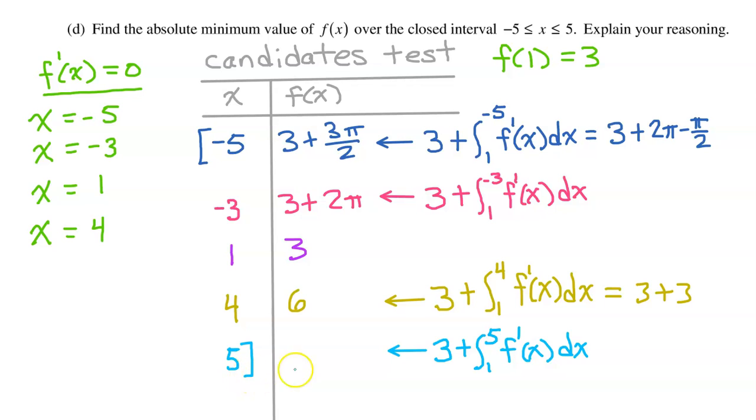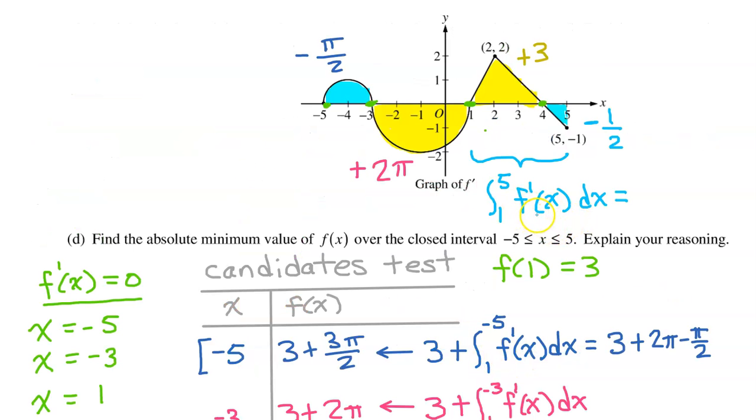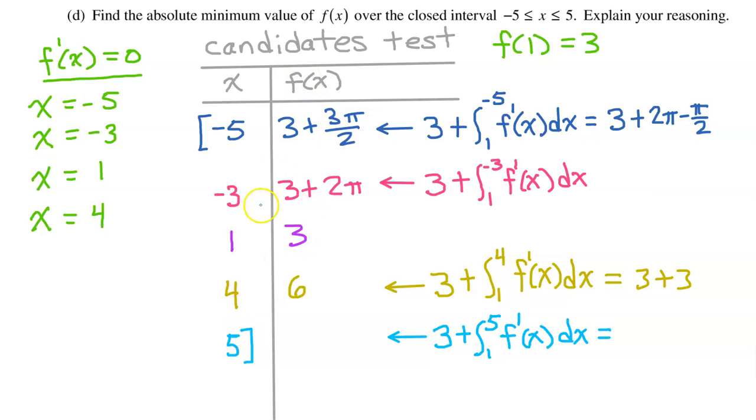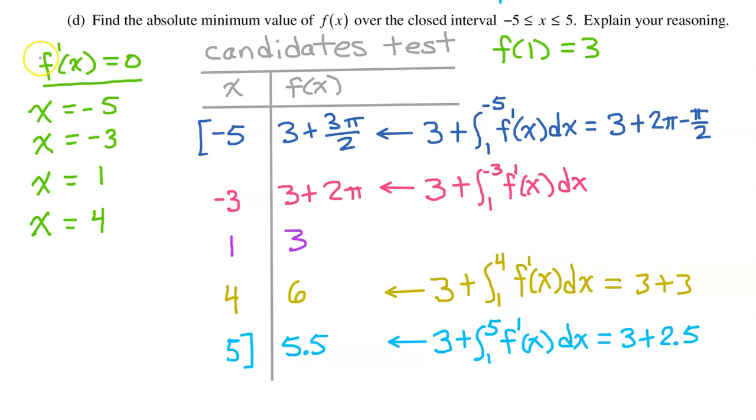The value of f at 5 should equal the initial value of 3 plus the integral of f prime from 1 to 5. The integral of f prime from 1 to 5 is the net area of the yellow triangle and this tiny blue triangle. We already calculated that the area of the yellow triangle is positive 3. And the tiny blue triangle clearly has an area of negative 1 half of a unit. Together that makes 2.5. So f at 5 is equal to 3 plus 2.5. In other words, f at 5 is 5.5.